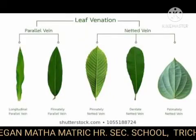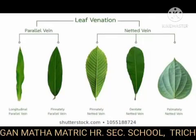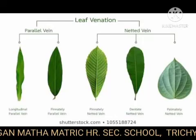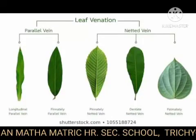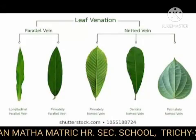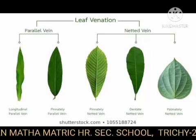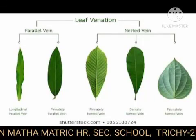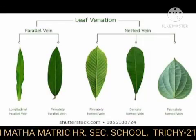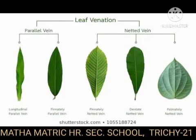Next we are going to see about venation. The arrangement of veins and veinlets on the leaf blade or lamina is called venation. Internally, the vein contains vascular tissues. Conventionally, venation is classified into two types: reticulate venation and parallel venation.